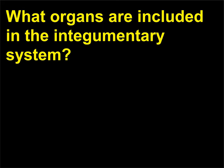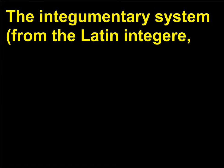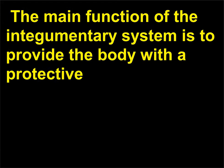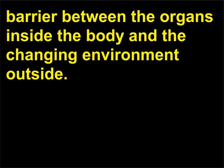What organs are included in the integumentary system? The integumentary system — from the Latin integer, meaning to cover — includes skin, hair, glands, and nails. The main function of the integumentary system is to provide the body with a protective barrier between the organs inside the body and the changing environment outside.